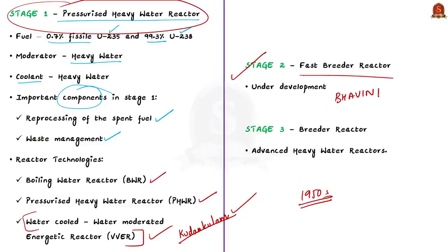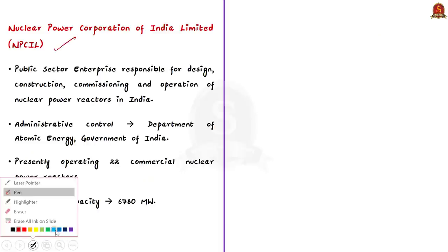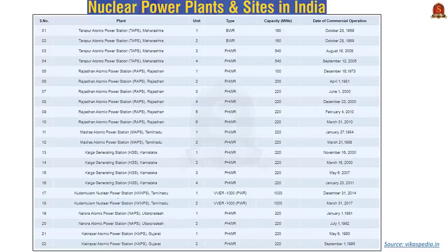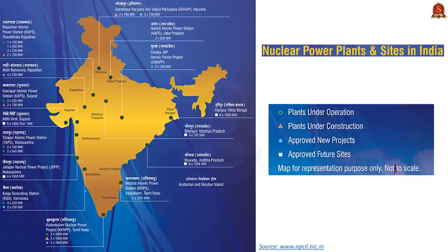In India, the Nuclear Power Corporation of India Limited (NPCIL) is responsible for the design, construction, commissioning, and operation of nuclear power reactors — Stage 1. It is a central public sector undertaking under the administrative control of the Department of Atomic Energy, Government of India. NPCIL is presently operating 22 commercial nuclear power reactors with an installed capacity of 6,780 megawatts. The reactor fleet comprises two boiling water reactors at Tarapur, Maharashtra, and 18 pressurized heavy water reactors at various locations including Rawat Bhata in Rajasthan, Kalpakam in Tamil Nadu, Kaiga in Karnataka, Narora in Uttar Pradesh, and Kakrapar in Gujarat, as well as two VVER reactors at Kudankulam in Tamil Nadu.